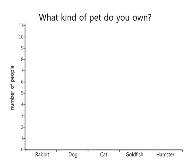Here's an empty bar graph. Before we look at the actual information on a bar graph, let's look at a few features of the bar graph. First of all, we have a title: 'What kind of pet do you own?' So we know what this graph is about.